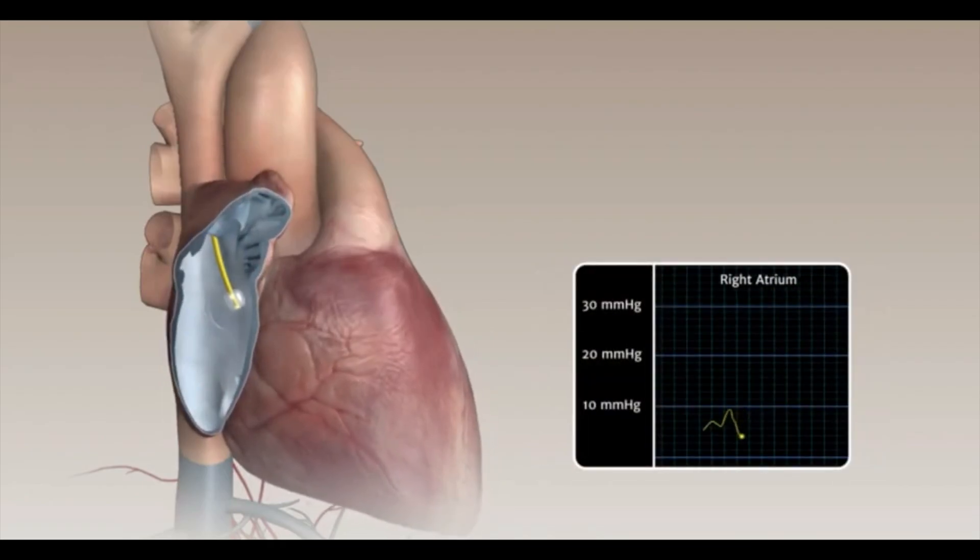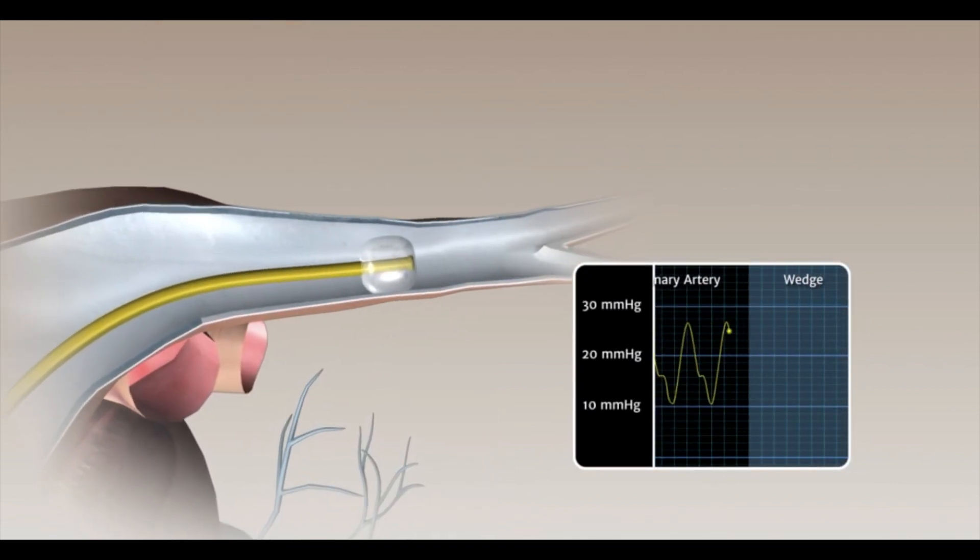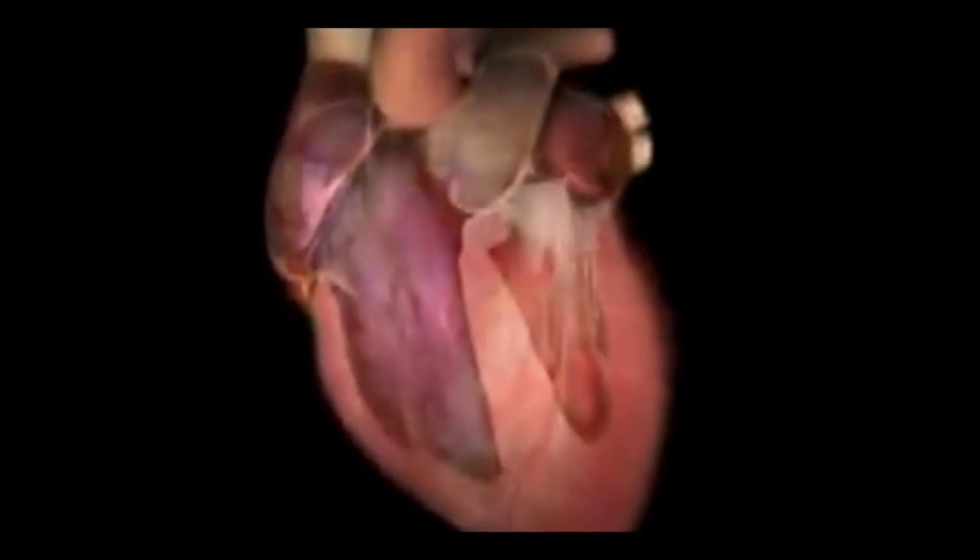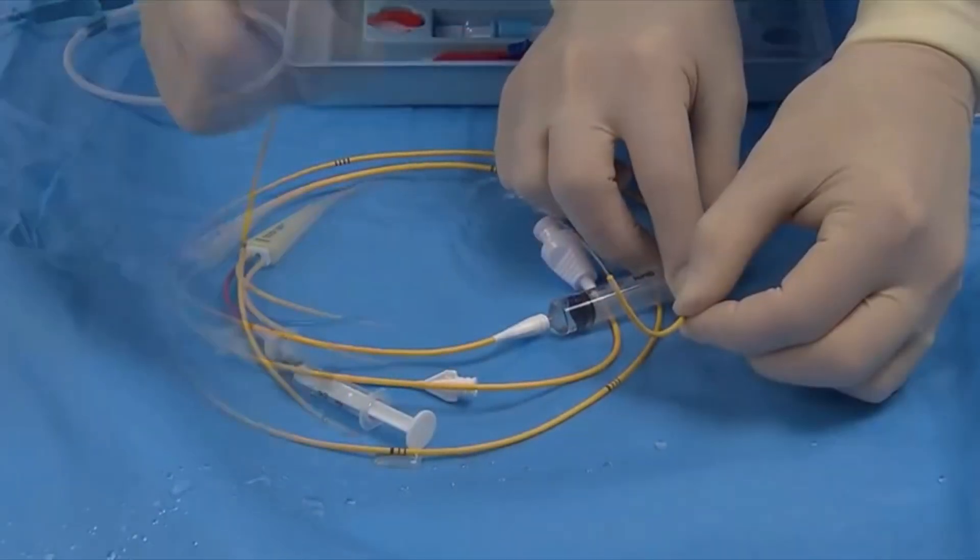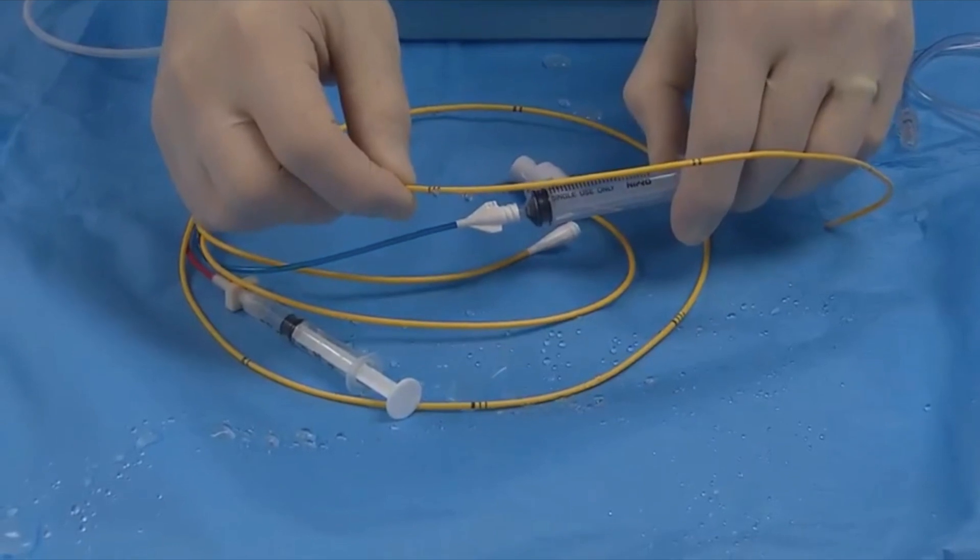Pulmonary catheter is used to measure right atrial pressure, pulmonary artery pressure, pulmonary capillary wedge pressure, cardiac output, and oxygen saturations in the right heart chambers. The Swan-Ganz balloon flotation catheter was introduced in 1970.